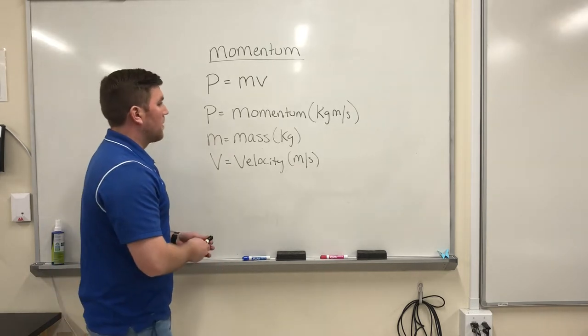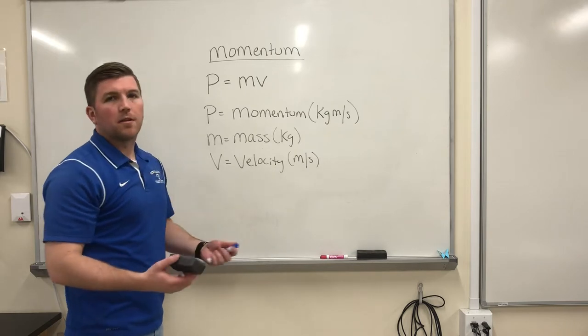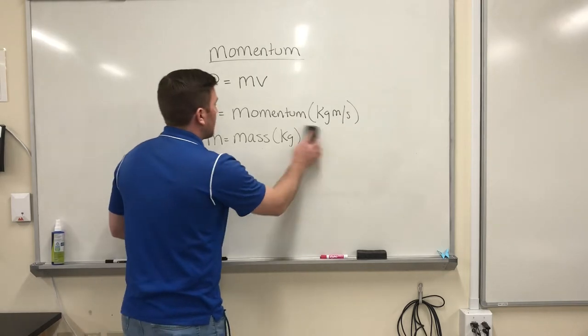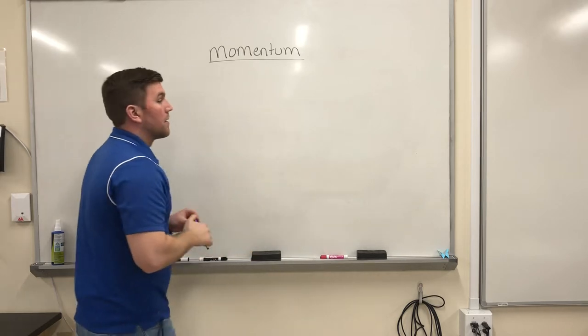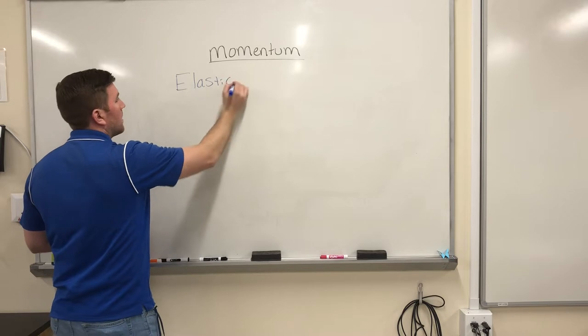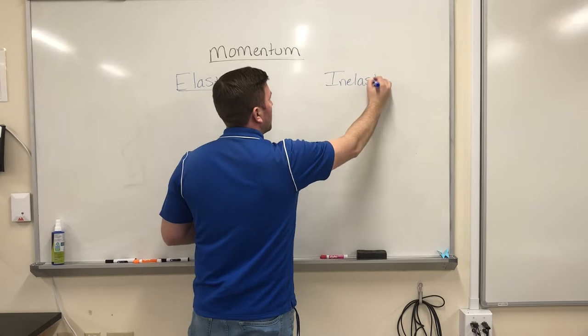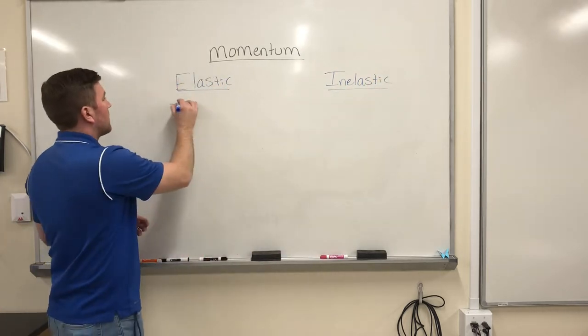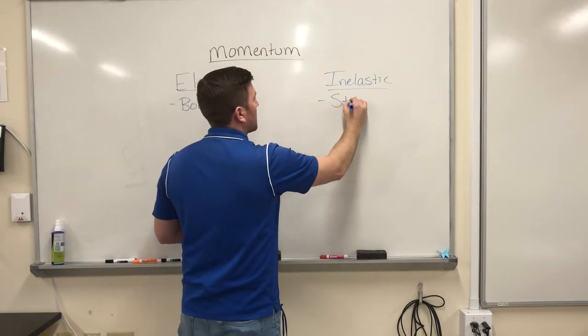But there are certain ways beyond this that we can talk about momentum, and the most common is in collisions. So when two things collide, they can do it one of two ways. You can either collide elastically, have an elastic collision, or an inelastic collision. Very basically, elastic collisions mean things bounced, and an inelastic collision means they stuck together.